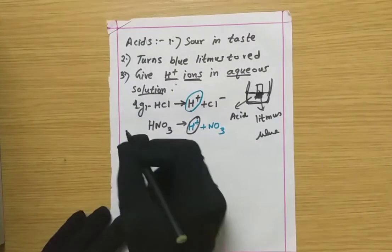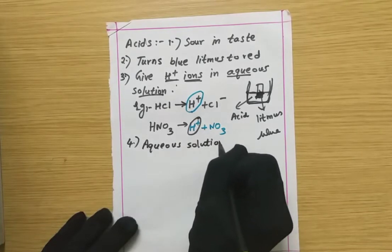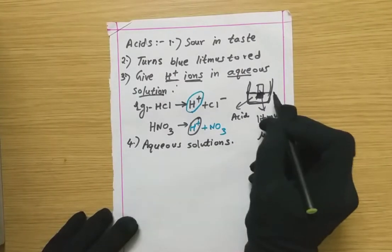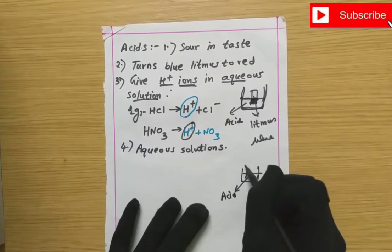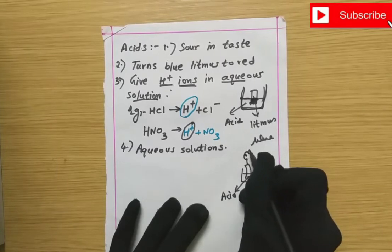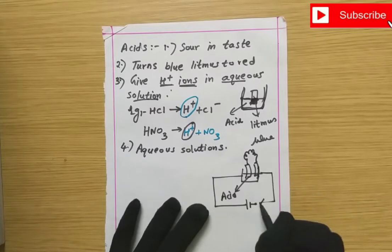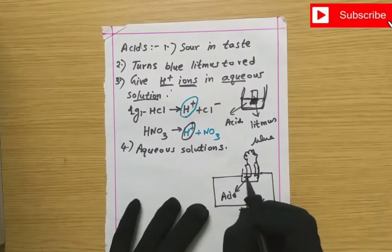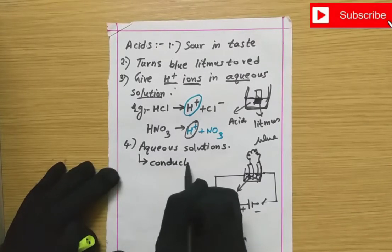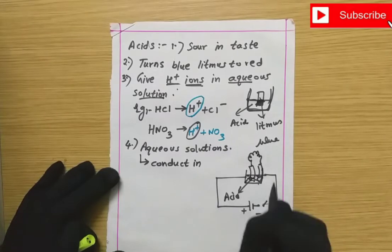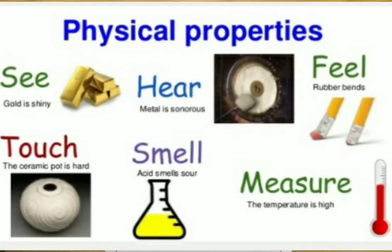If we connect an aqueous acid solution in an electric circuit — taking a beaker, pouring an acid, connecting two electrodes with a wire, a switch, and a battery — when we switch on the battery and apply voltage, it will conduct. So a special feature of acids is that they conduct electricity in aqueous solution.